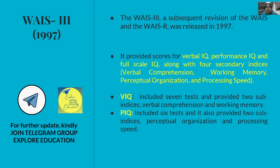The third revision, WAIS-III, was released in 1997. It still provided scores for Verbal IQ, Performance IQ, and Full Scale IQ, but additionally introduced four secondary indices: Verbal Comprehension, Working Memory, Perceptual Organization, and Processing Speed.